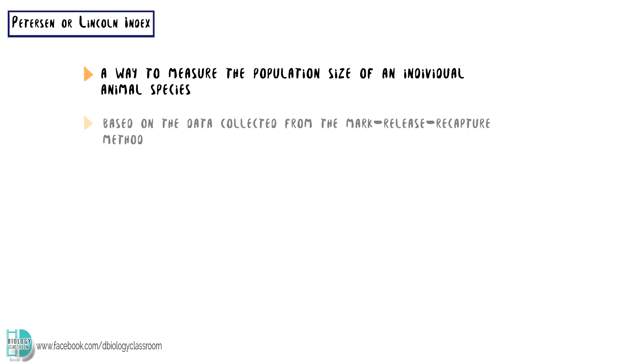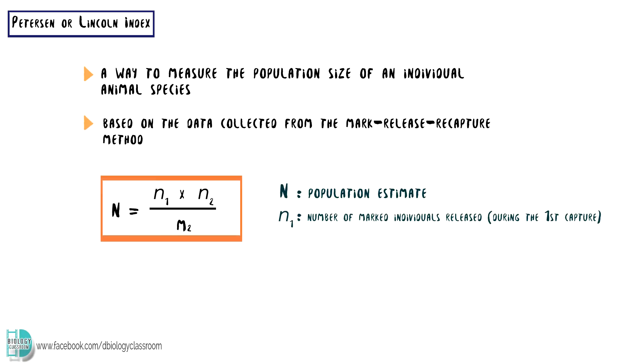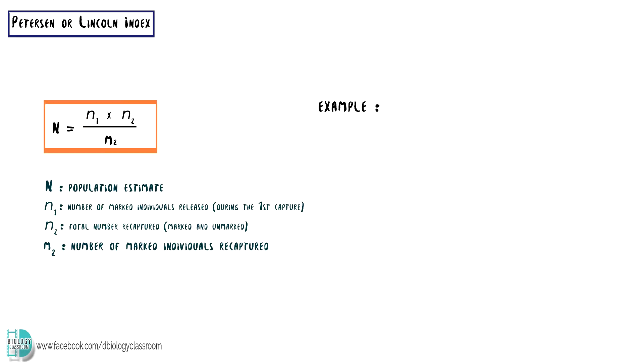The Peterson or Lincoln index provides a way to measure the population size of an individual animal species. It is based on the data collected from the mark-release-recapture method. This is the formula: the population estimate N equals n₁ times n₂ divided by m₂, where n₁ is the number of marked individuals in the first capture, n₂ is the total number of individuals recaptured, and m₂ is the number of marked individuals in the recapture cohort.